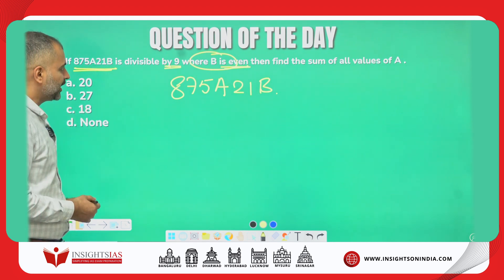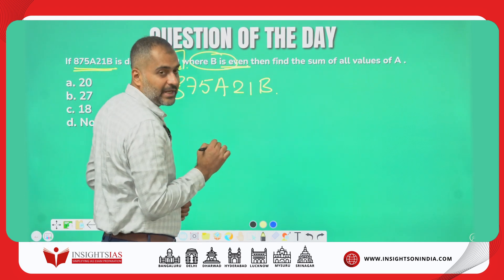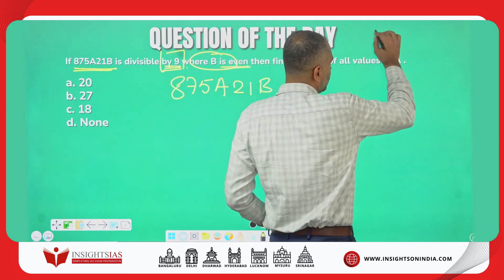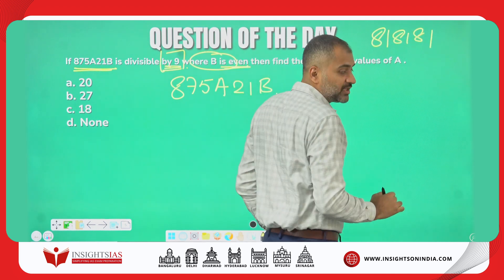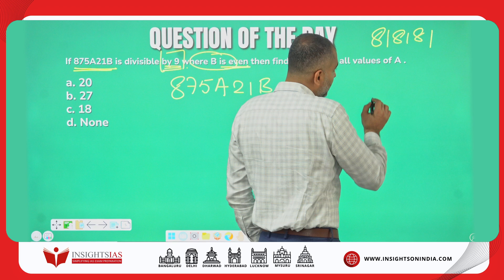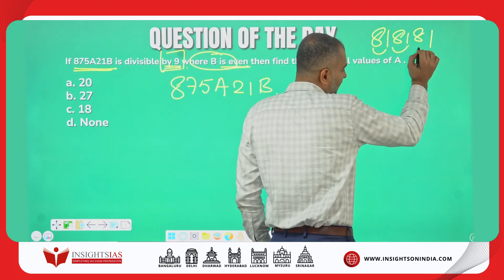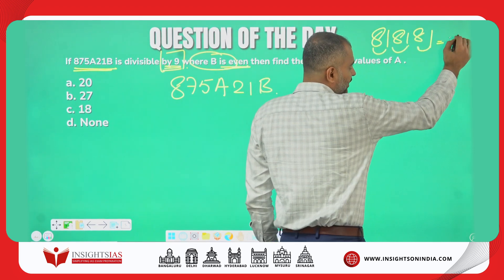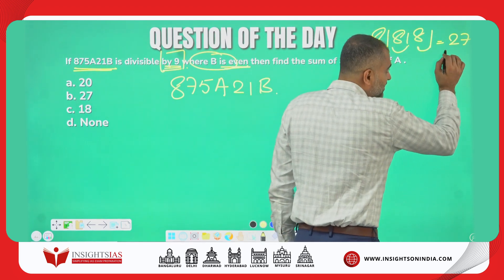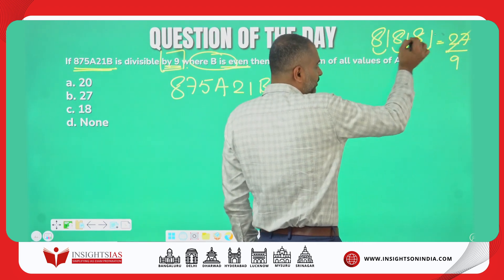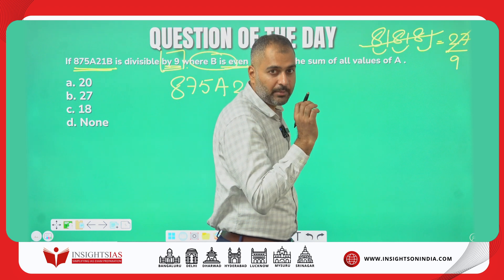To check divisibility by 9: for example, 818181 — sum the digits: 8+1=9, 8+1=9, 8+1=9, total is 27. Is 27 divisible by 9? Yes. So the entire number is divisible by 9. The rule: if the sum of digits is divisible by 9, the whole number is divisible by 9.